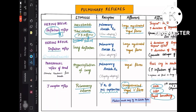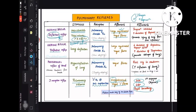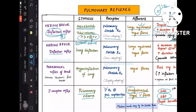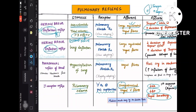Since over-inflation is occurring, the response must decrease air entry into the lung. So the afferent inhibits inspiration and increases the duration of expiration, preventing lung injury from overinflation. For J receptor reflex the afferent was unmyelinated, whereas for Hering-Breuer it is myelinated vagal fibers.